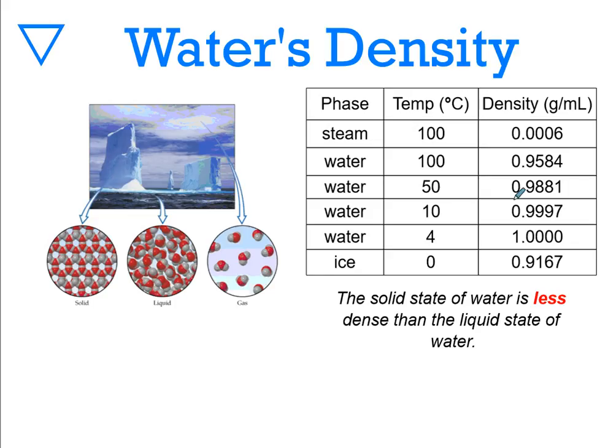So the most dense form of water is the liquid form. And the closer it is to freezing but still in liquid form, the closer it is to a density of one gram per milliliter.